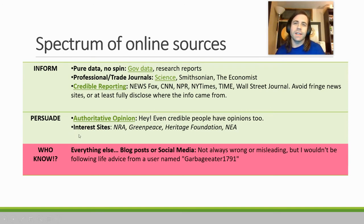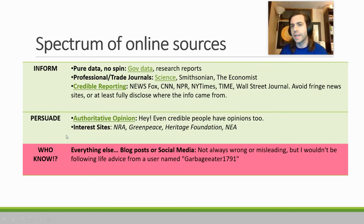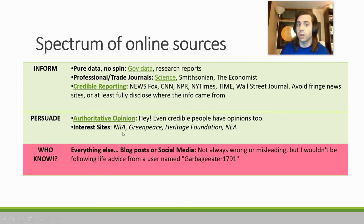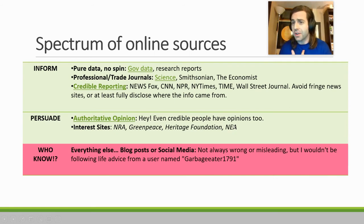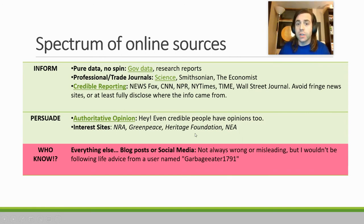That last category — barely above the line that we should use, but we should be cautious — I'm going to call interest sites. This is any group or organization that has an online presence that's trying to promote something. That could be against gun laws, like the NRA does. Do you think the NRA is ever going to publish an article that says gun control laws work? No, they're not — that's not what that organization is for. Same thing with the NEA, the National Educators Association, an association I'm a part of. Do you think the NEA is ever going to say something super critical about teachers? Probably not — they are defending their interests. Their information may not be factually incorrect, but it's definitely going to be very biased, trying to get me to think a certain way. As long as I know that, I can use that information to explain that perspective.